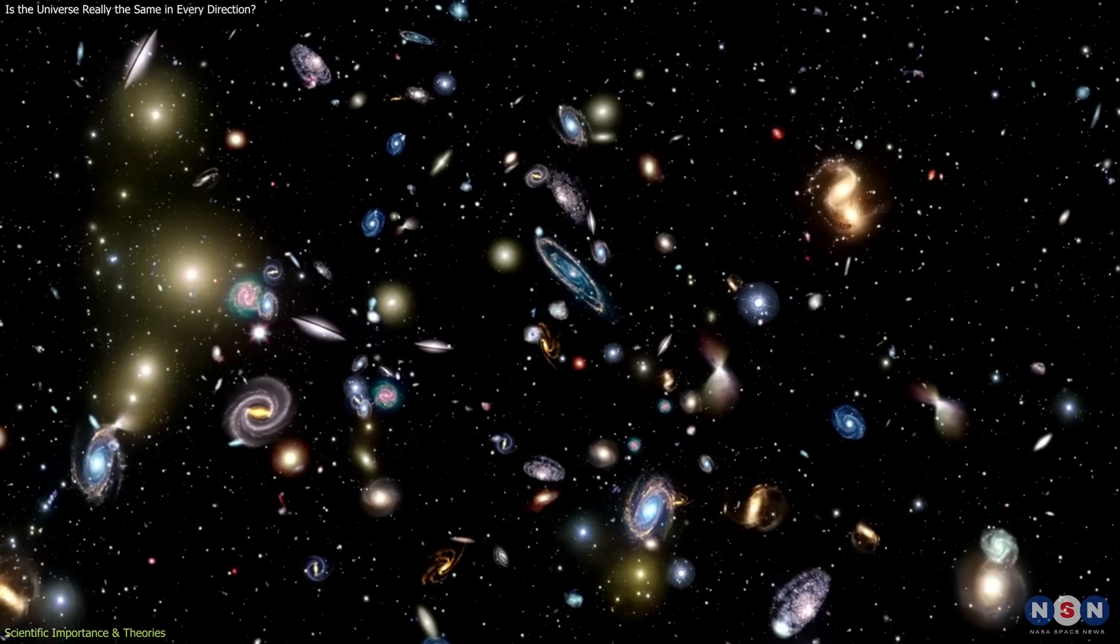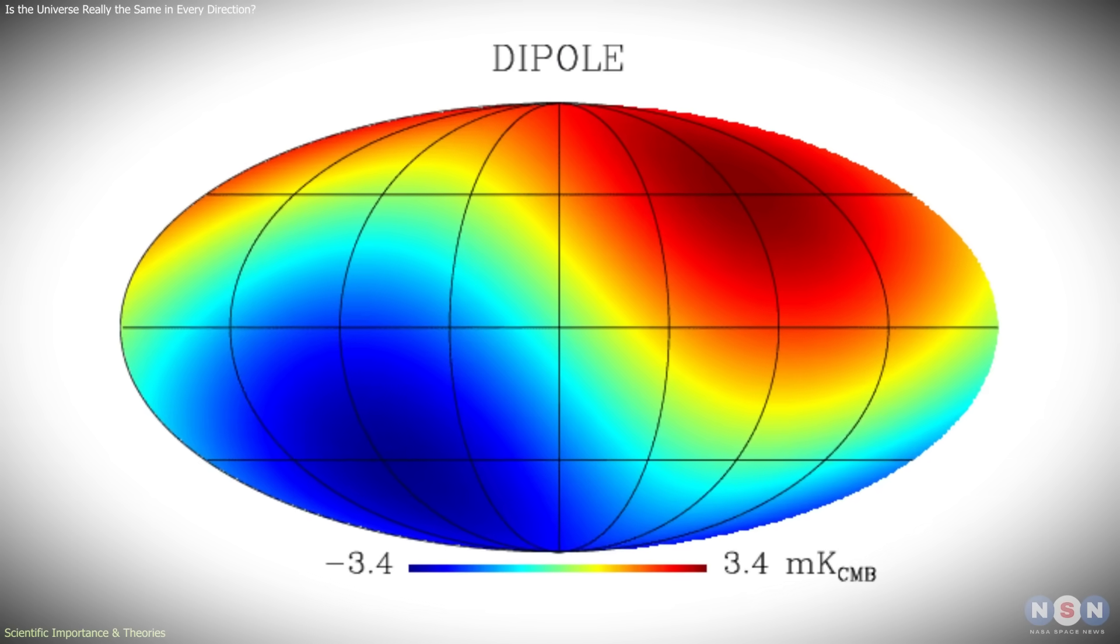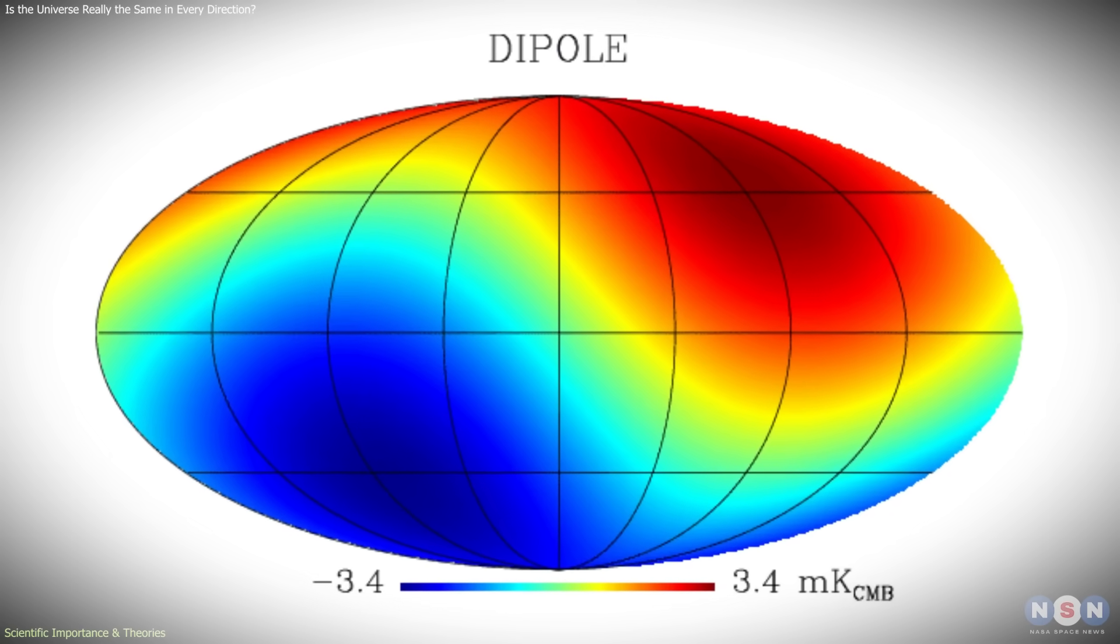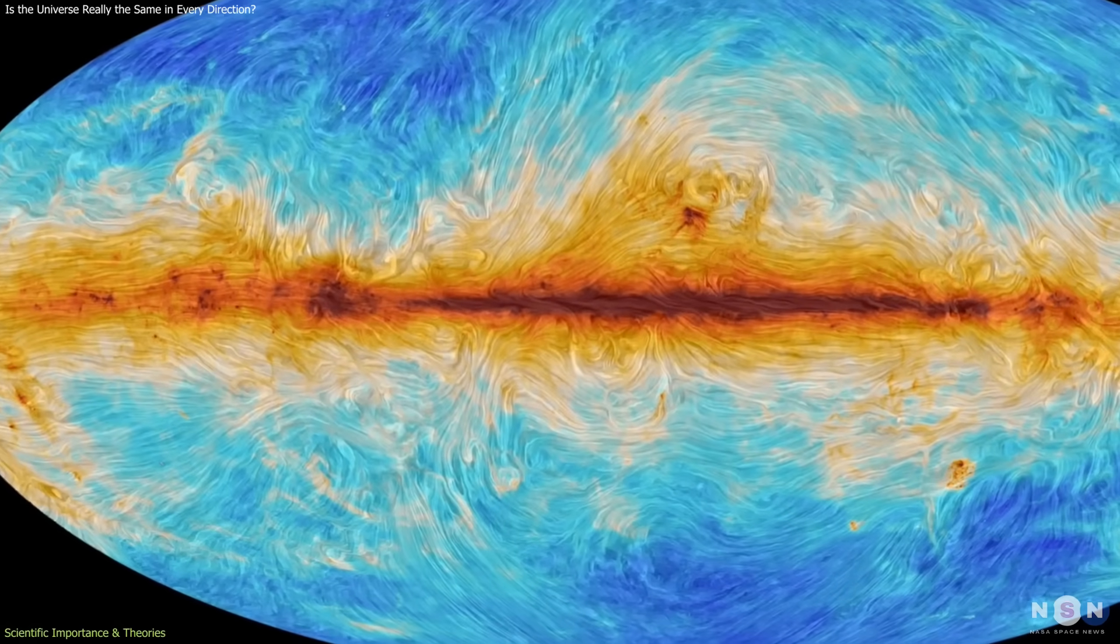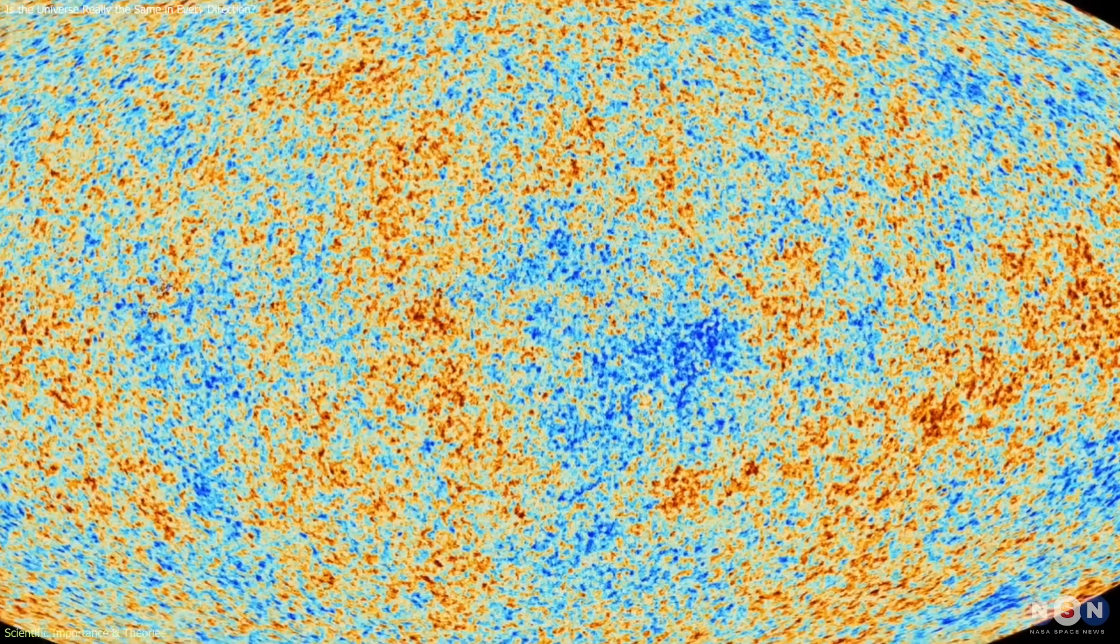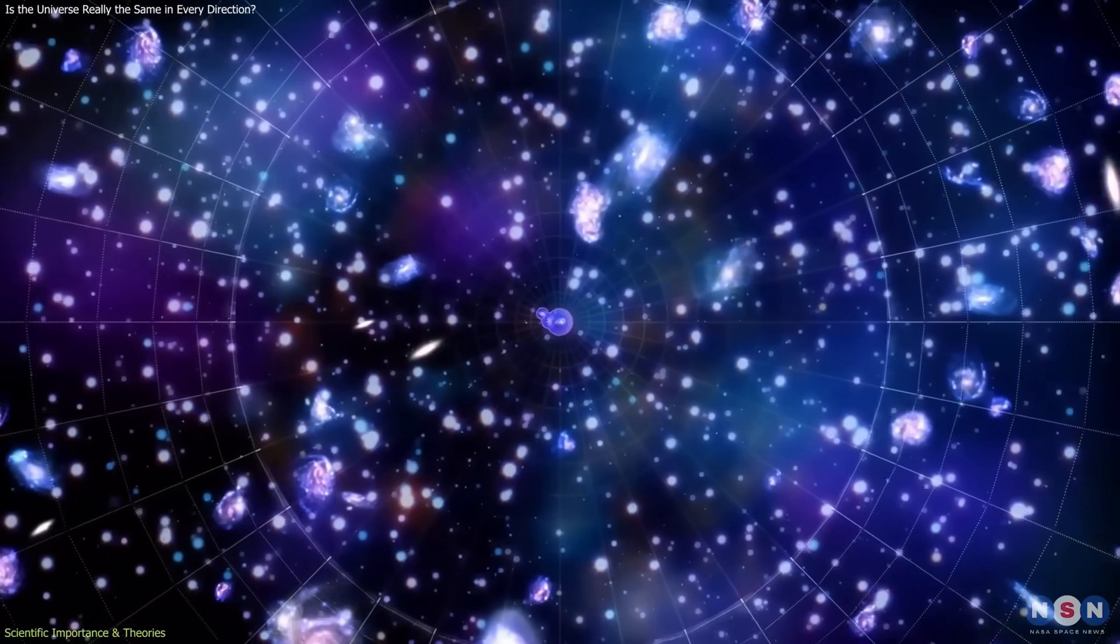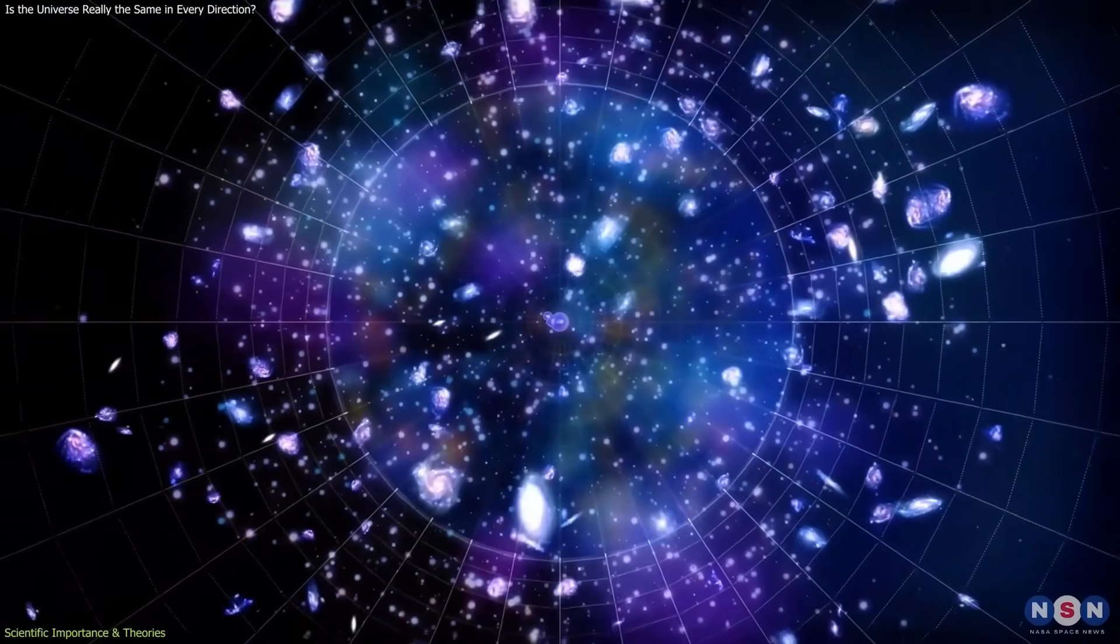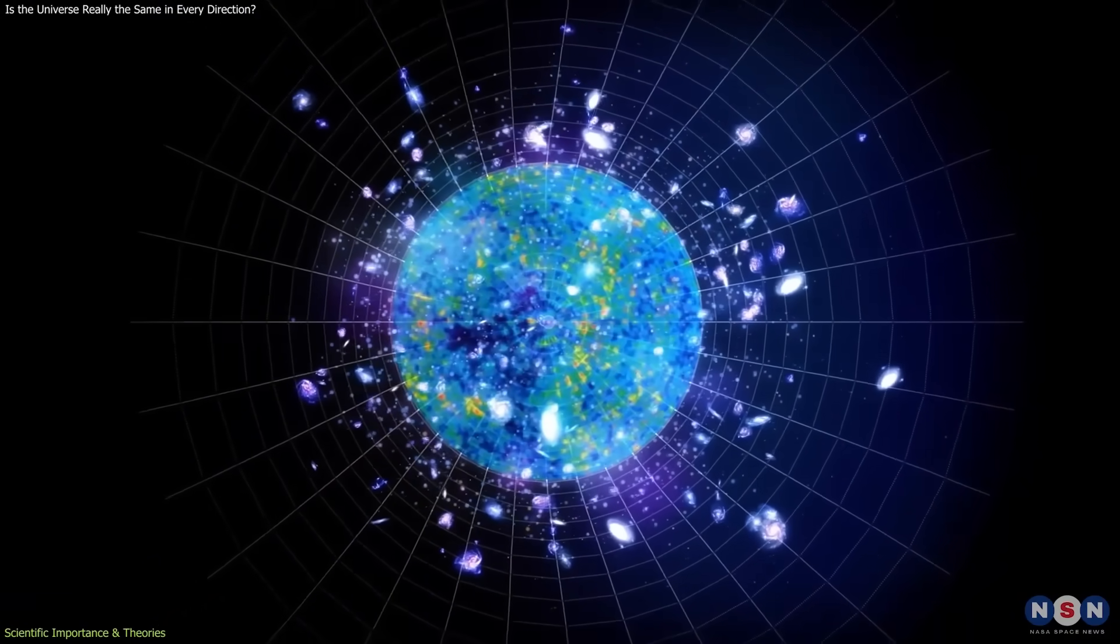Unlike other well-known tensions in cosmology, the cosmic dipole anomaly does not point to a disagreement between different measurements of the same quantity. Instead, it questions whether the geometric assumptions used to interpret those measurements are valid in the first place. There is no simple parameter adjustment within Lambda-CDM that resolves the anomaly while preserving isotropy.